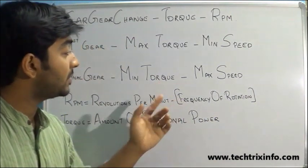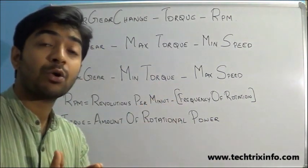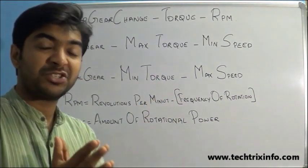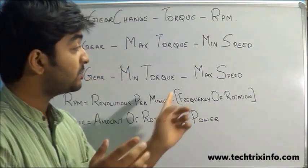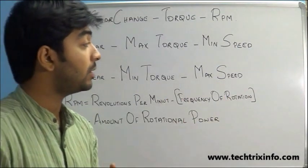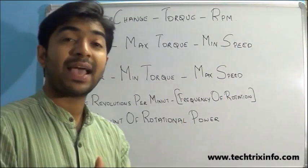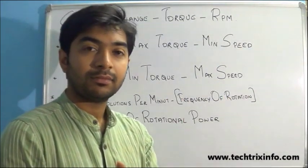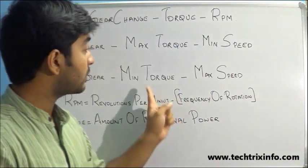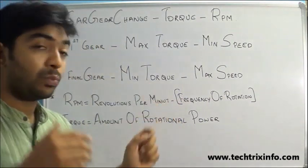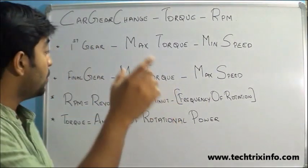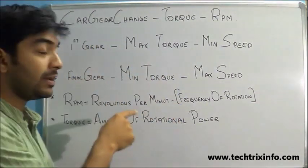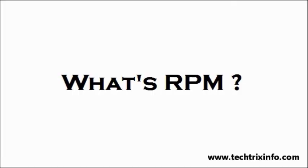With minimum torque, the fuel economy will be much higher and the speed of the vehicle will be at its maximum. The torque requirement is very low when driving on a highway, which is why we select the final gear.